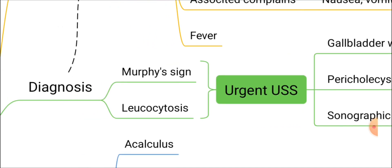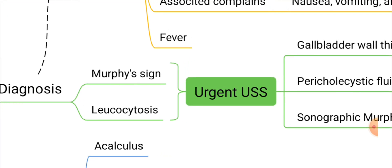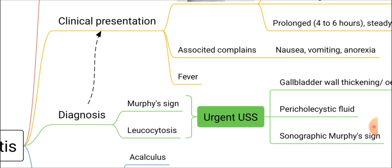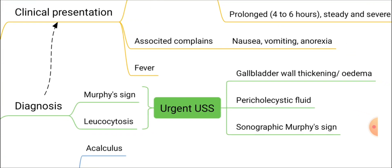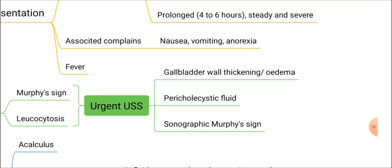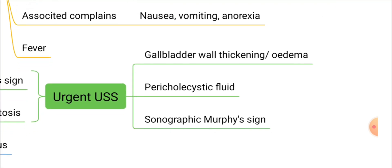In clinical examination you will detect Murphy's sign, and blood investigations will reveal leukocytosis indicating inflammation. Other inflammatory markers like CRP will also be elevated. With these clinical, physical examination, and investigative findings, you should proceed with an urgent ultrasound scan. The ultrasound will show gallbladder wall thickening, oedema, pericholecystic fluid, and sonographic Murphy's sign — where the scan probe presses the right hypochondriac region instead of the hand.